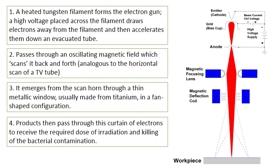In terms of how it works mechanically: a heated tungsten filament forms the electron gun. A high voltage is placed across the filament, which draws electrons away and accelerates them down an evacuated tube. As electrons travel through the tube, they pass through oscillating magnetic fields which scan them back and forth like a TV tube. They emerge in a fan-shaped configuration, and products pass through this fan of electrons on a conveyor belt, receiving the required dose of irradiation to kill bacterial contamination.